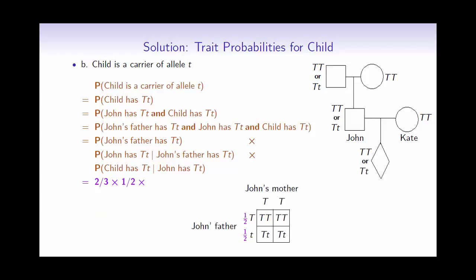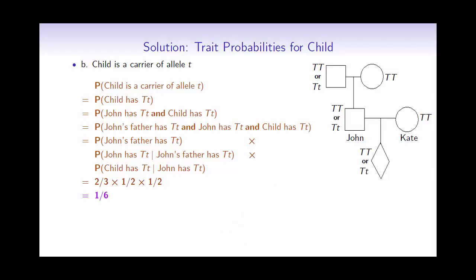The probability that John is a carrier given that his father is a carrier is easier to compute: it's one-quarter plus one-quarter, which gives one-half. In exactly the same way, the last probability — that the child is a carrier given John is a carrier — is also one-half. Multiplying all three probabilities together, the final answer for the child being a carrier of Tay-Sachs is one-sixth.